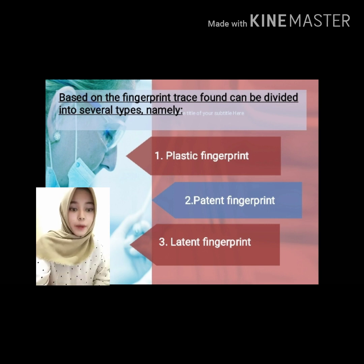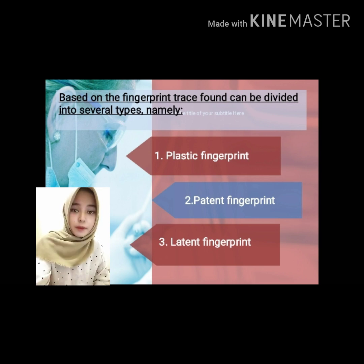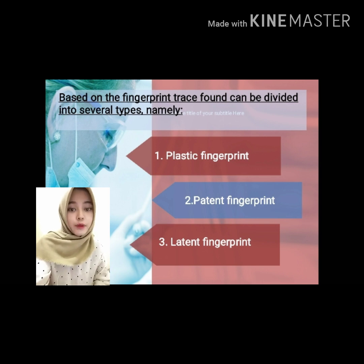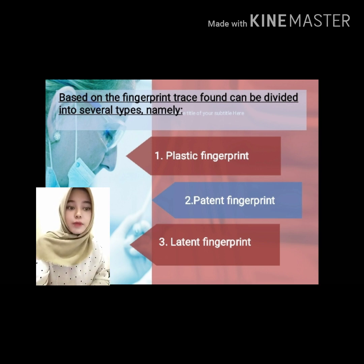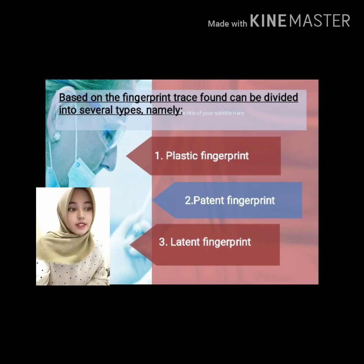Second, patent fingerprint. This fingerprint imprints on surfaces because of covering agents such as blood, soil, oil, and others. Patent fingerprint traces can be seen visually. Third, latent fingerprint. This type of fingerprint imprints on a surface that is formed or held, because our body's secretions — part of sweat produced from sweat glands — contain electrolytes along with fat, urea, and other organic compounds.